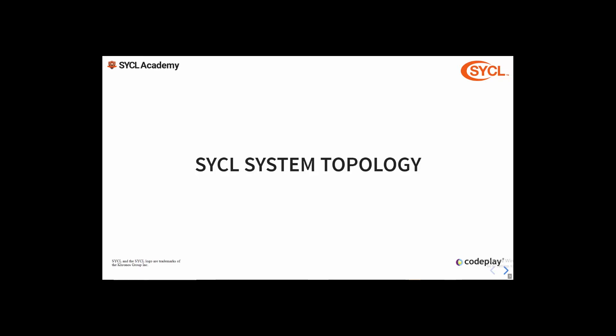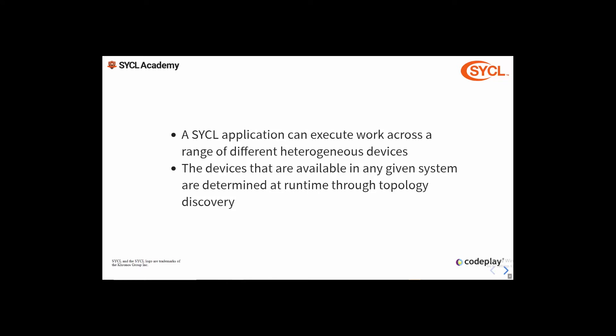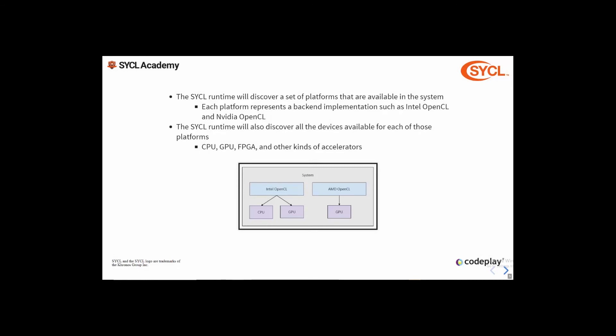First let's take a look at the SYCL system topology and how it's structured. A SYCL application can execute work across a range of different heterogeneous devices, and the devices available in any given system are determined at runtime when you do topology discovery. When creating the topology there will be a number of platforms available. Each platform is an implementation of a particular backend — for example, an OpenCL backend for Intel and an OpenCL backend for Nvidia are different platforms. Platforms can generally not communicate directly with each other, which we'll see come up in a later lecture on data movement.